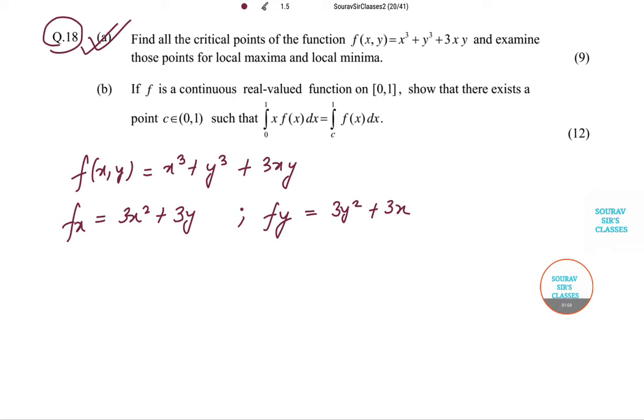Now we will get the direct second order partial. So it will be 6x and fyy will be 6y, and fxy that means the second order partial derivatives will be this.